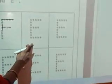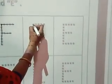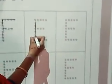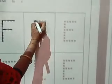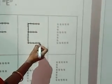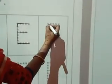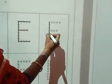See, this is dotted E. Standing line, sleeping line, sleeping line, sleeping line. See, now it becomes E. Which is the letter? This is letter E. E, E, okay?